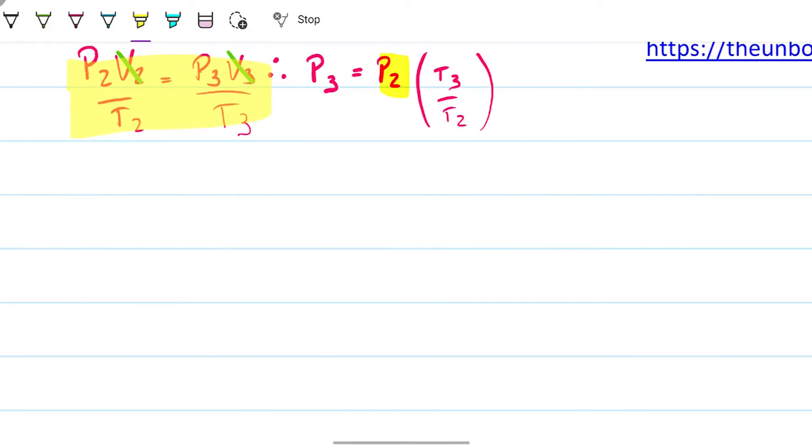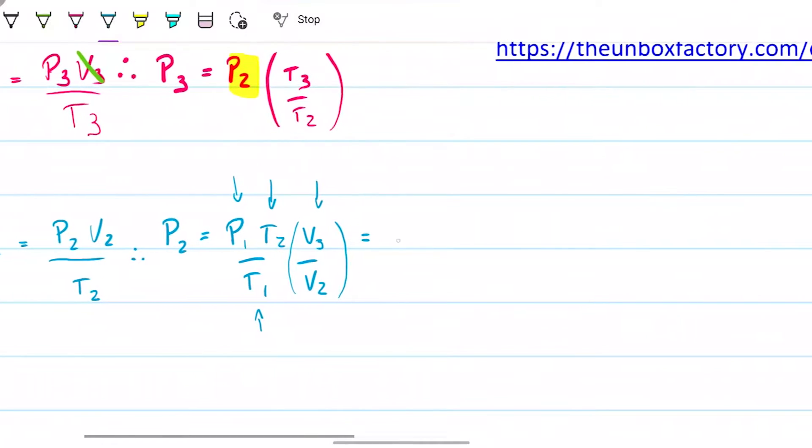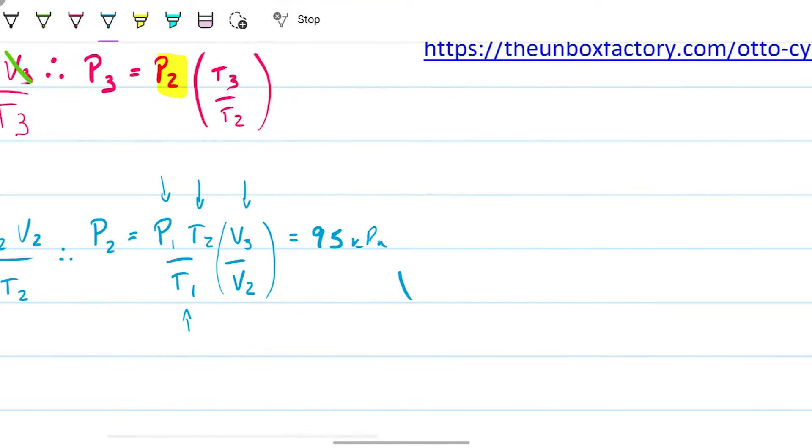I'm going to do the same exact thing, exactly the same thing, but with state number one. So I'm going to say P₁V₁ divided by T₁ has to be equal to P₂V₂ divided by T₂. And I'm looking for P₂. So this is relatively easy. This is 95 kilopascals times the temperatures we found. For state one, it was 300 Kelvin, and for state number two, 673.1.